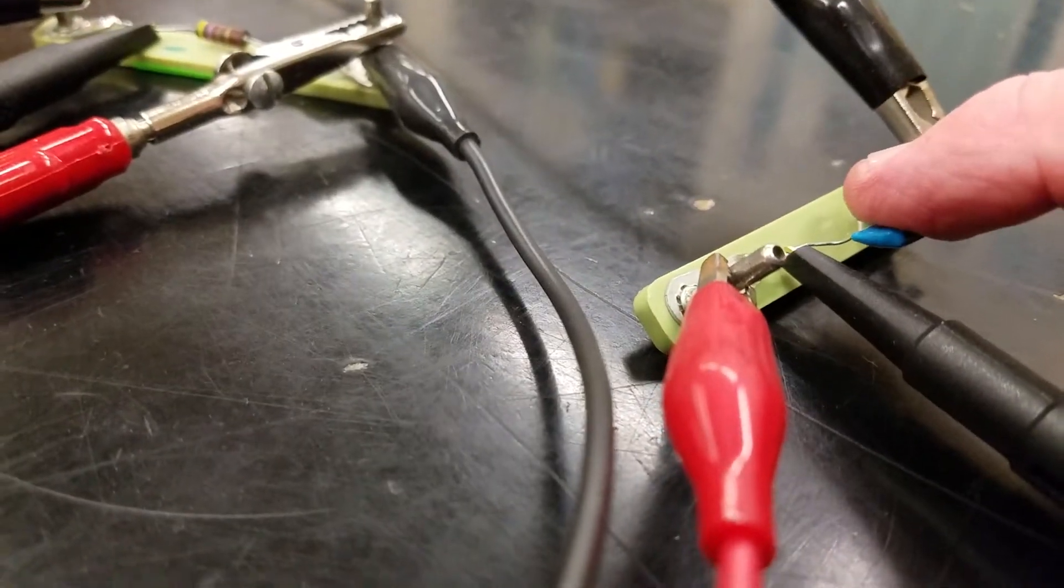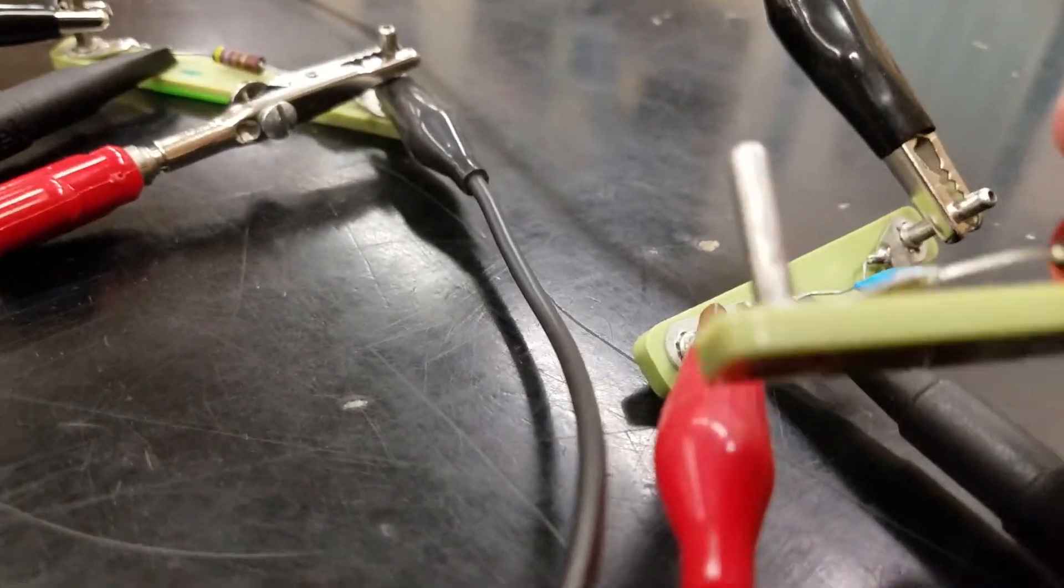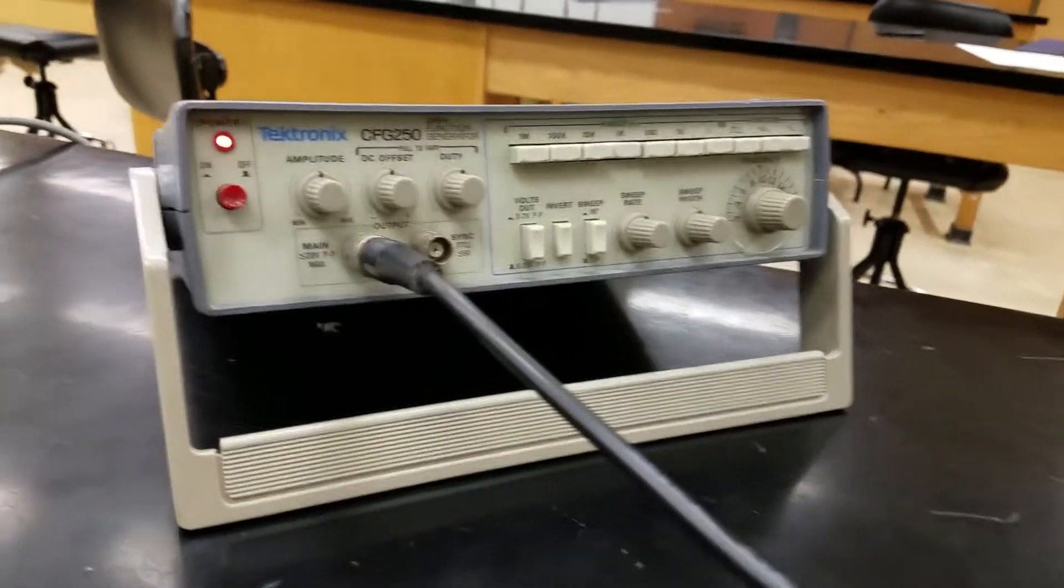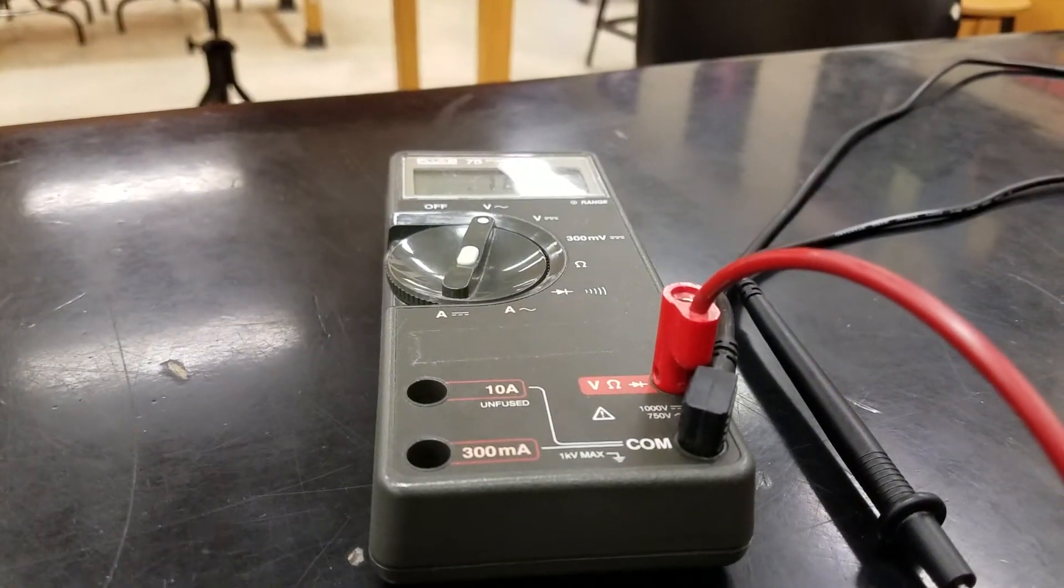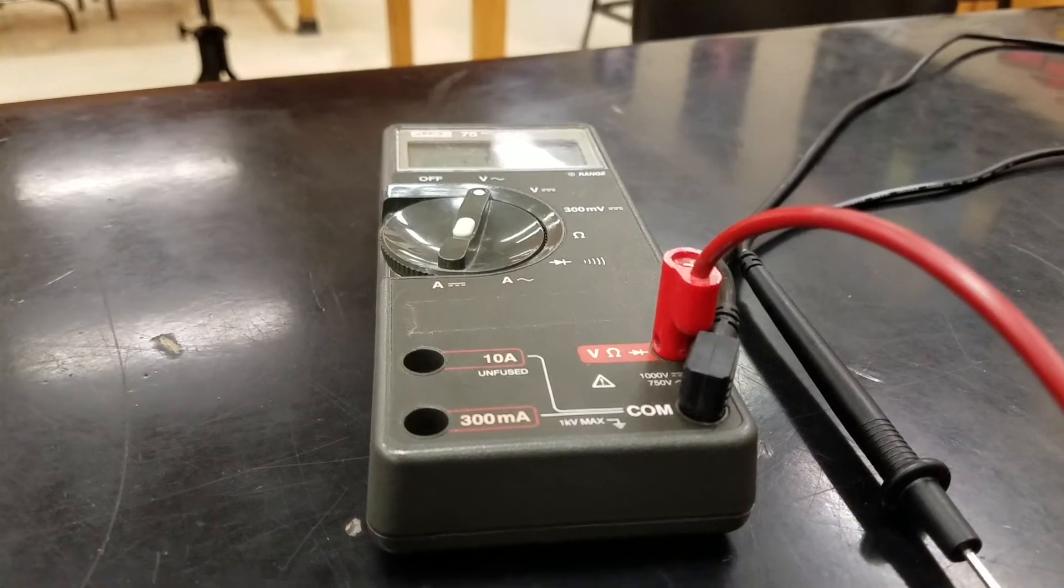For the second part, the RL circuit, I'll simply remove the capacitor and put in the inductor. I leave everything else the same. I use the same three frequencies. I ensure that the amplitude gives me roughly three volts coming out and then I use my voltmeter to measure the voltage across the resistor and the voltage across the inductor.